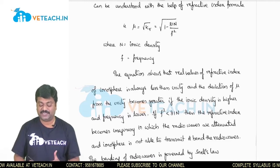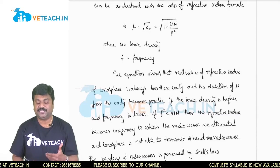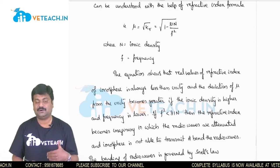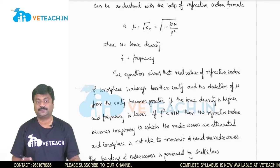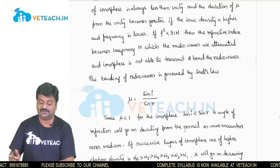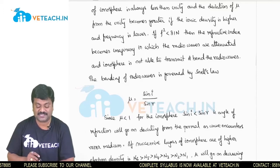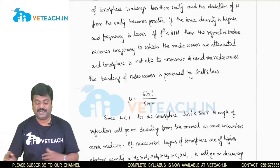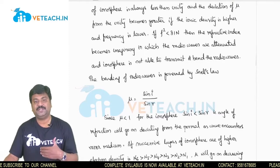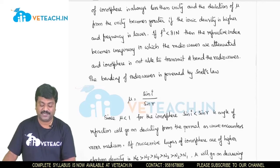The refractive index is always less than unity, and it becomes greater when the ionic density is high or the frequency is low. If the condition f-squared is less than 81n holds, then the refractive index becomes imaginary, in which case radio waves are attenuated and will not be able to transmit or bend.